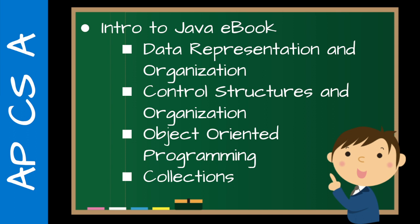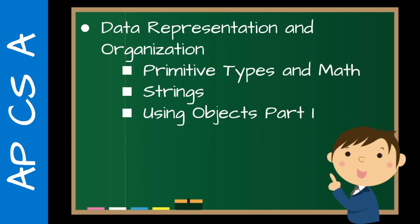So let's take a look at the Intro to Java eBook. I've organized it into four sections: Data Representation and Organization, Control Structures and Organization, Object-Oriented Programming, and Collections. The section we're on right now is Data Representation and Organization, looking at Primitive Types and Math, then Strings, and Using Objects Part 1. It's organized slightly differently, based on where students really have issues, to scaffold those concepts a little bit better than the AP does.